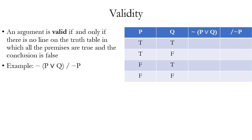Now let's fill in the truth values of our compound propositions. The premise has two logical operators, the tilde and the wedge. We start with the wedge because it has the smaller scope, bounded by the parentheses. The wedge is only false where both disjuncts are false — that's row four. Applying the tilde reverses those values, so rows one to three become false and row four becomes true. The conclusion tilde P just reverses the truth value of P on each row.